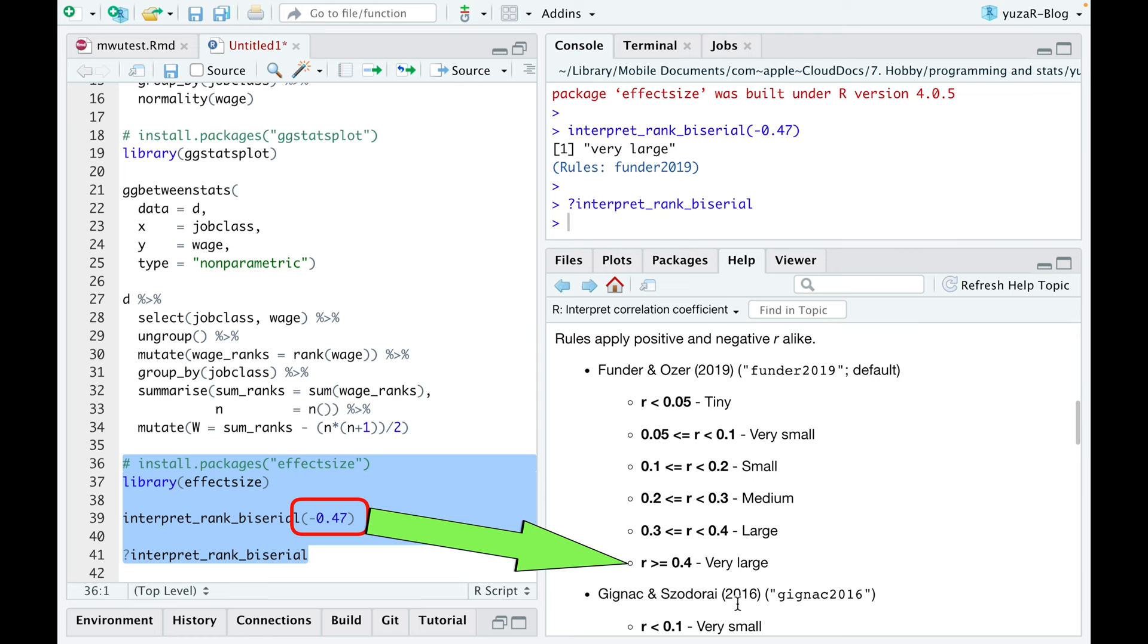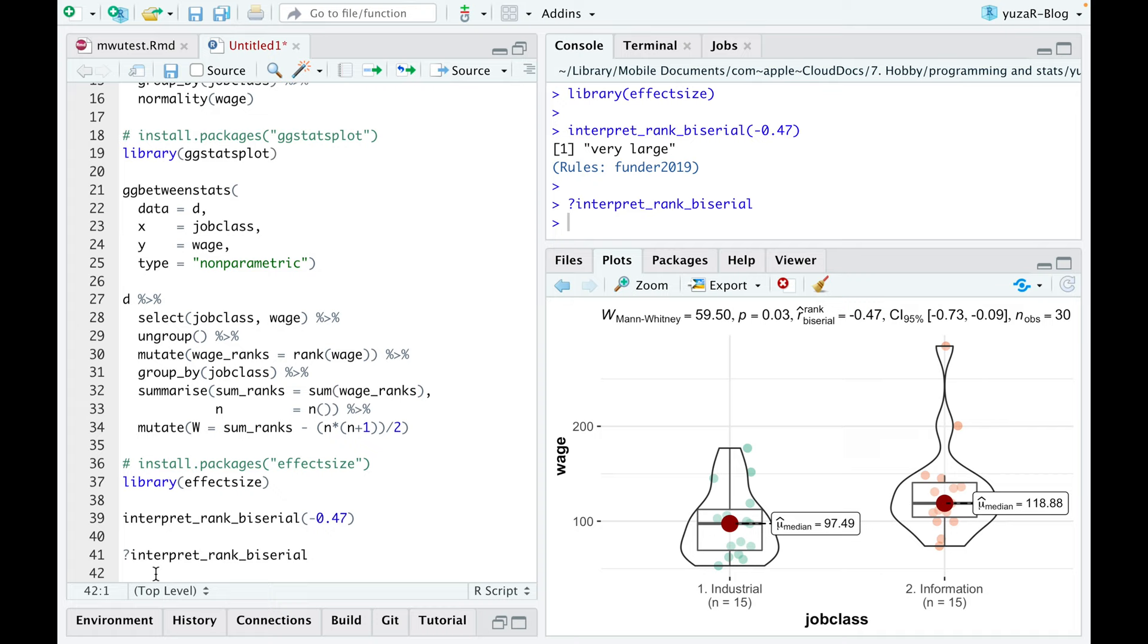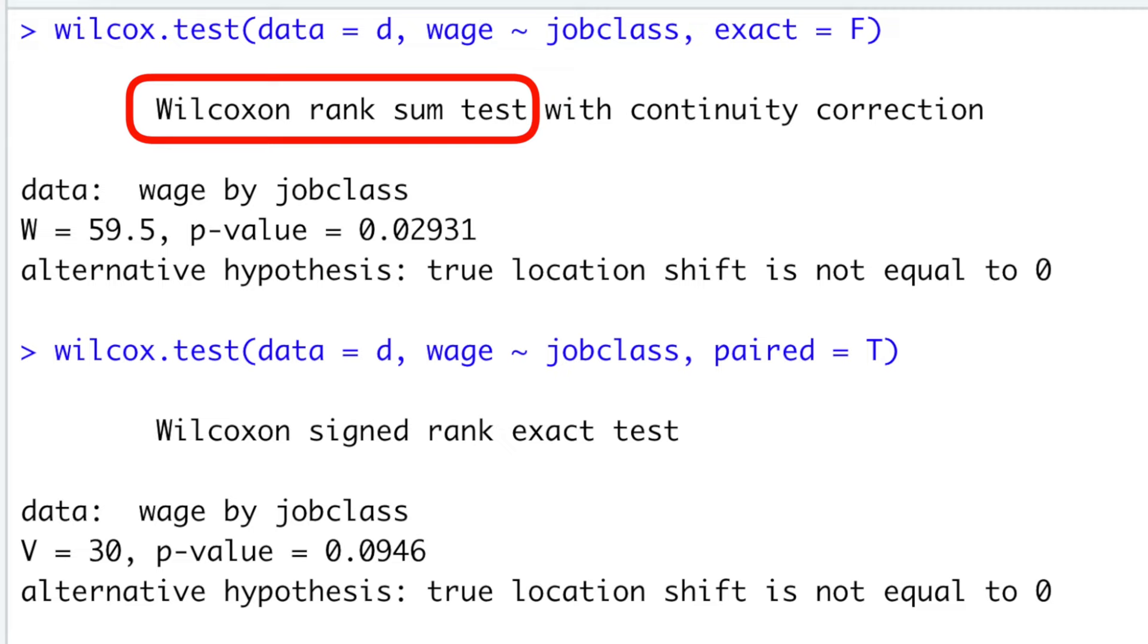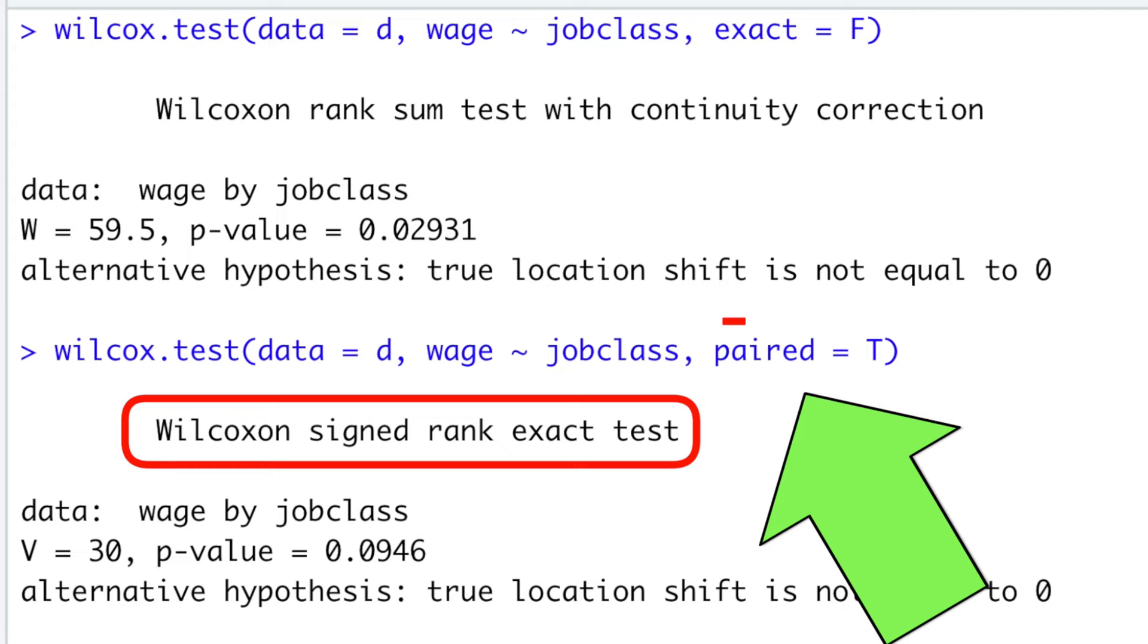So, as you can see, both the test itself and its name are confusing. And I prefer to stay with Mann-Whitney-U name, because Wilcoxon rank sum test can be easily mistaken with the Wilcoxon signed rank test, which can only be applied for paired samples.